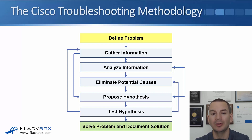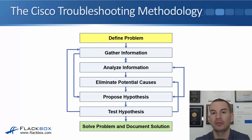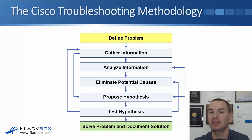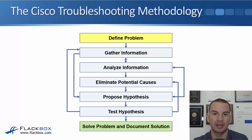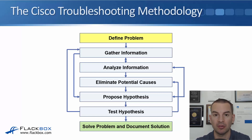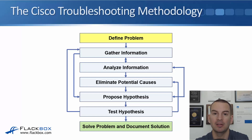You can then move on to eliminating potential causes. For example, if you're troubleshooting a connectivity issue from a source to a destination and there are several routers between them, check the first hop router and if the configuration all looks good there you can eliminate that as the cause and then check the next hop router along the path.